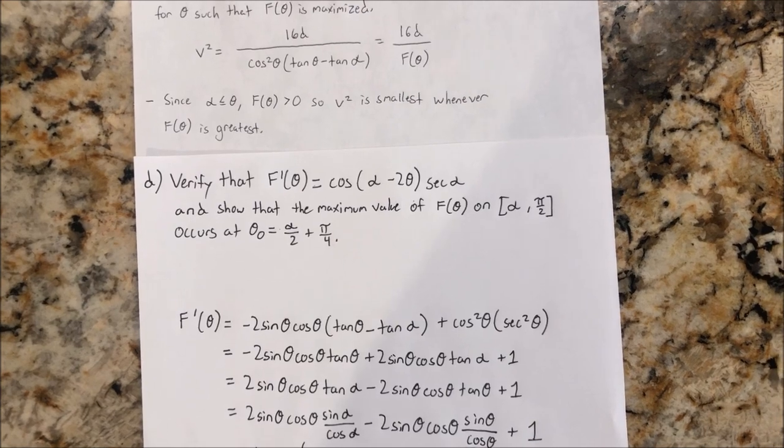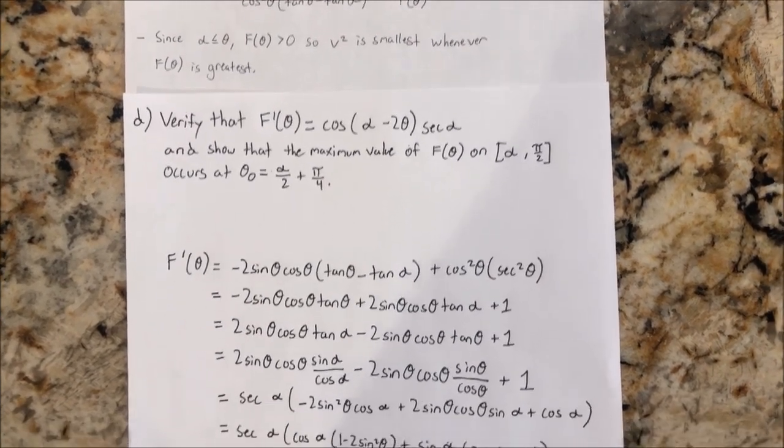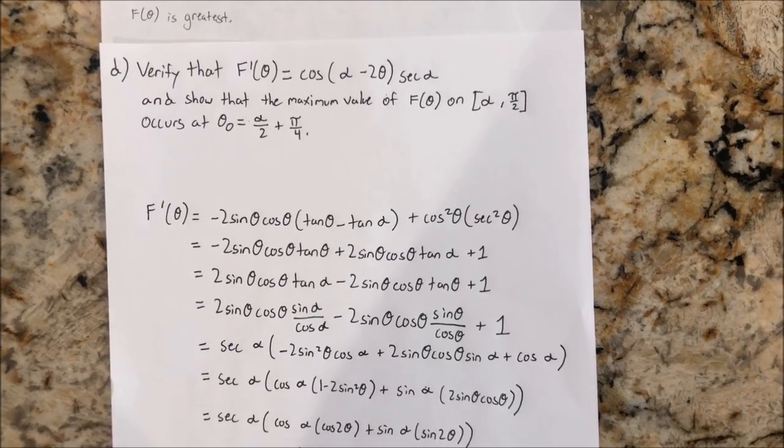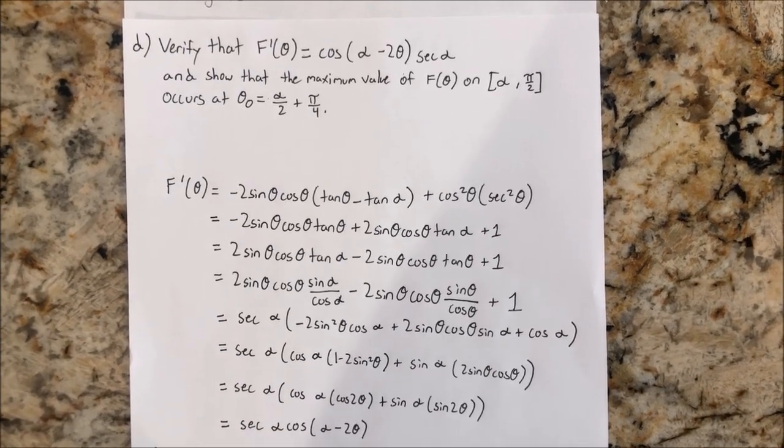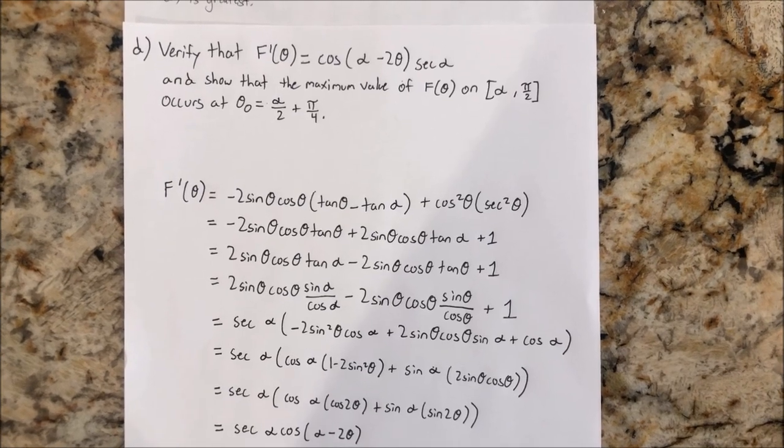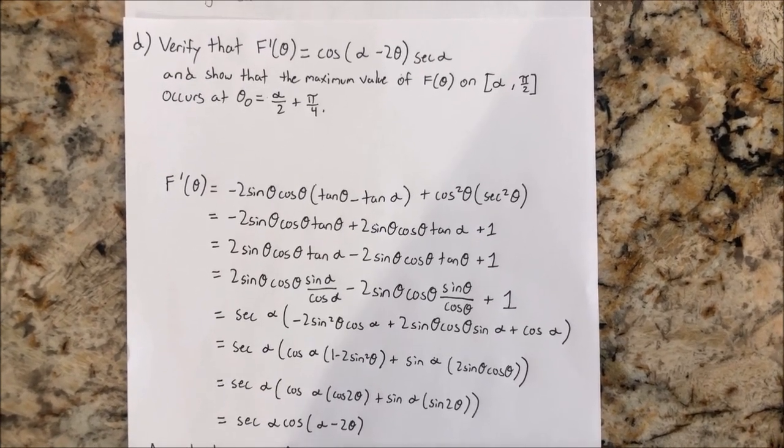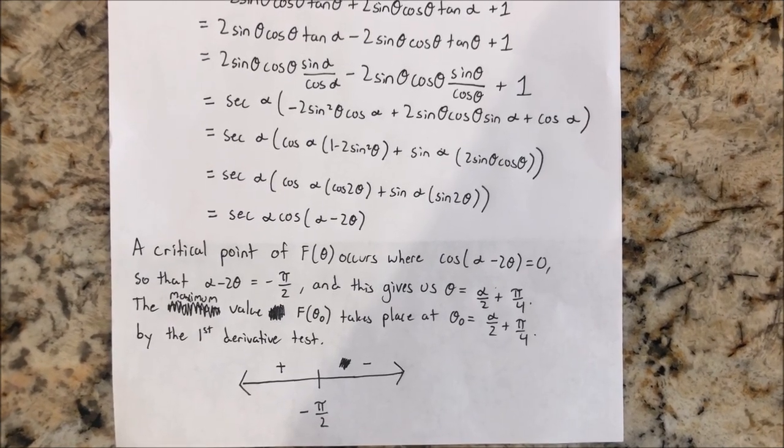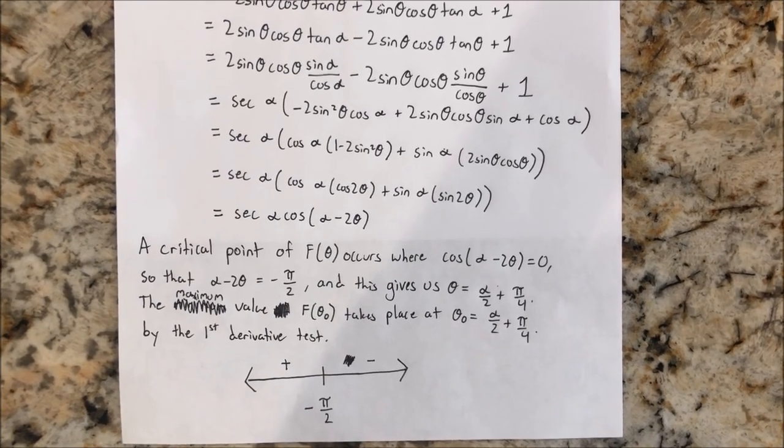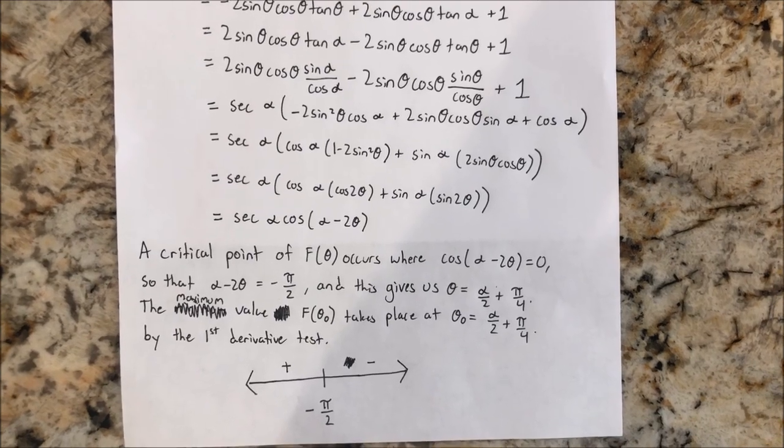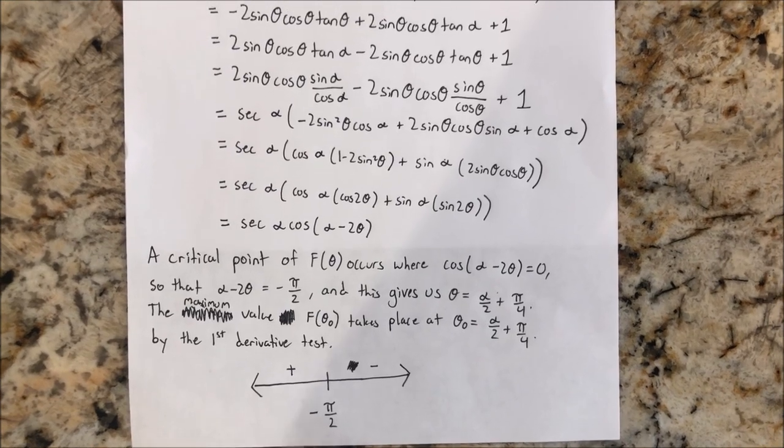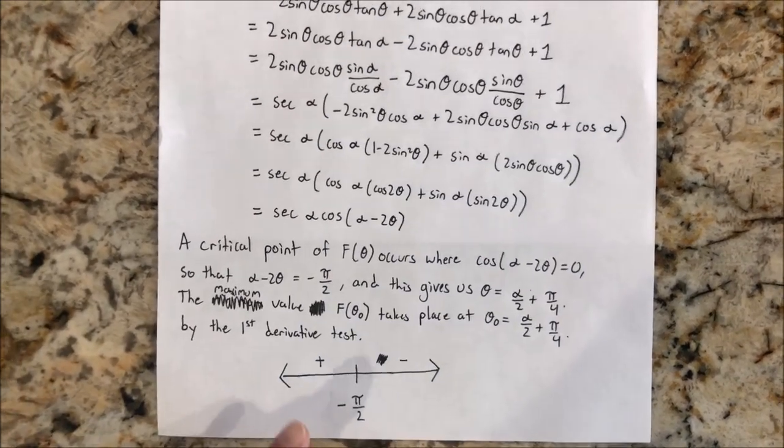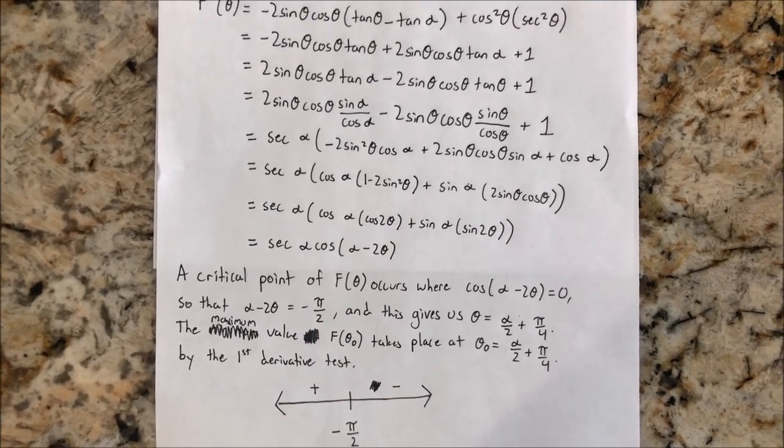And then we would set tan is equal to sine over cosine so that we can factor out a secant alpha. And then after we factor out the secant alpha, then we can see that we can factor by grouping so that we can apply the double angle theorems. And then we can apply the cosine law of subtraction to indeed see that f prime of theta is equal to secant alpha times cosine alpha minus 2 theta. And then we would see that a critical point of theta occurs where cosine alpha minus 2 theta is equal to 0 so that alpha minus 2 theta is equal to negative pi over 2. And it is negative because 2 theta is greater than theta which is greater than alpha.